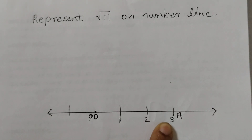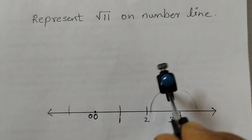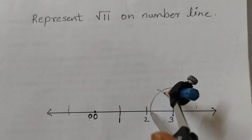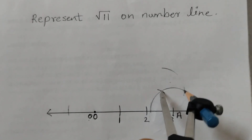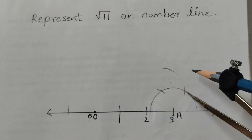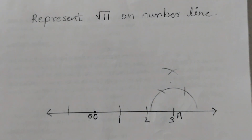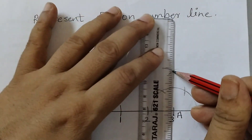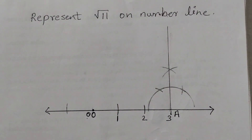At point A we have to draw a 90 degree angle. For that we are going to use the compass — you can use a protractor also. Keep the metal point at A and draw a circle. Then, keeping the same length, mark one point here, one up here, and one down here to get a point of intersection. Join this point and this point to create the perpendicular.